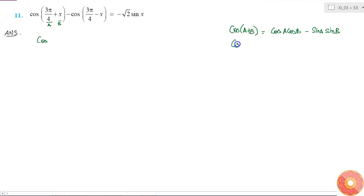And what is cos(a - b)? It is equal to cos a cos b plus sin a sin b.